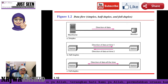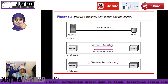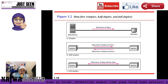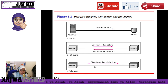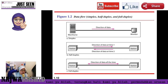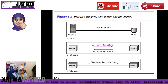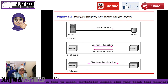Half duplex means both devices can send data, but not simultaneously. The third type is full duplex, where both devices are able to send data simultaneously. You can refer to Figure 1.2: this one is simplex, this one is half duplex, and this one is full duplex. That's all for data communication — later we'll talk about computer networks.